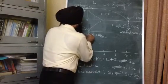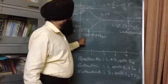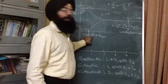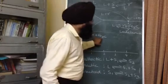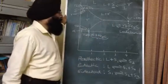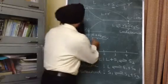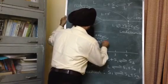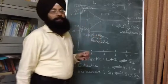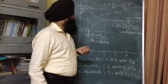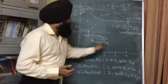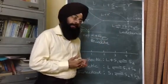The eutectoid reaction can be written as: gamma austenite (FCC structure) gets converted into alpha ferrite (BCC structure) plus cementite. This eutectoid mixture of alpha ferrite and cementite is known as pearlite. So pearlite is a eutectoid mixture of alpha ferrite and cementite. This is all about the three reactions that take place in the iron-carbon diagram. In the next video I will cover the different phases present in the iron-carbon diagram.